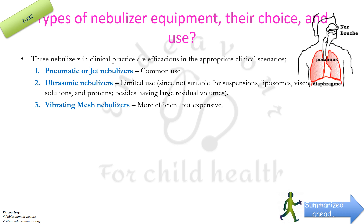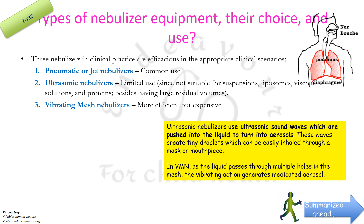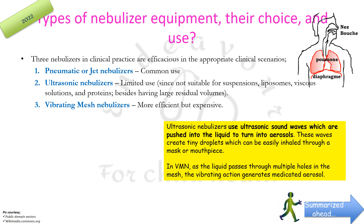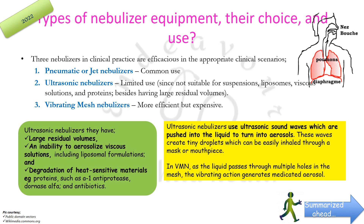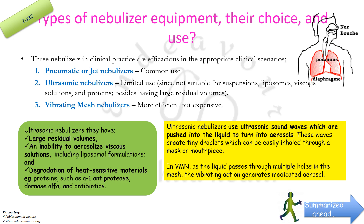Vibrating mesh nebulizers are more efficient but very expensive. Ultrasonic nebulizers use ultrasonic sound waves pushed into the liquid to generate aerosols that can be inhaled through a mask or mouthpiece. In vibrating mesh nebulizers, as the liquid passes through multiple holes in the mesh, the vibrating action generates medicated aerosols. Ultrasonic nebulizers have large residual volumes, cannot aerosolize viscous solutions including liposomal formulations, and may cause degradation of heat-sensitive materials such as alpha-1 antiprotease, dornase alfa, and antibiotics.